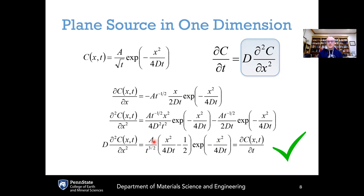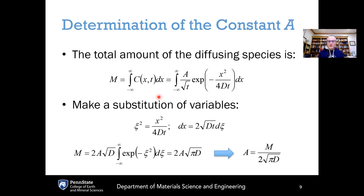Now we need to determine the value of the unknown constant A. We apply the condition that the total amount of diffusing species is held constant as M. This capital M equals the integral of concentration over all space from minus infinity to infinity. Substituting our Gaussian solution into this formula, we need to solve this integral to express A in terms of M.